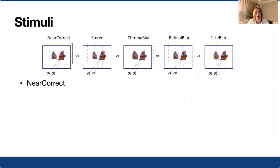In the near correct condition, multifocal rendering was used to present near physically correct focus cues, with some inaccuracies due to our objects being non-planar. In the stereo condition, our content was presented entirely on the near focal plane of our display, with no attempt made to simulate focus cues. The remaining three conditions were also presented entirely on the near focal plane and attempted to simulate focus cues to varying degrees of accuracy, the details of which I will go through now.